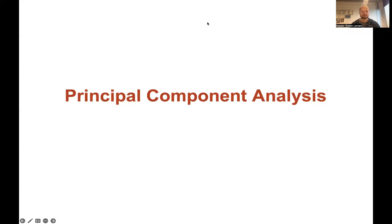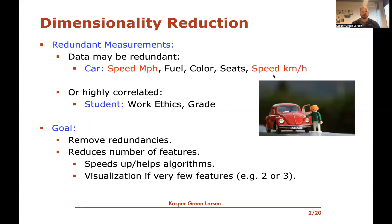Welcome to this next video on principal component analysis. In the previous video we motivated the need for dimensionality reduction: sometimes features are redundant — for instance, measuring speed in both miles per hour and kilometers per hour — or highly correlated, like a student's work ethic and their grade. The basic purpose of dimensionality reduction is to remove such redundancies, reduce the number of features to speed up algorithms, reduce storage requirements, and enable visualization.